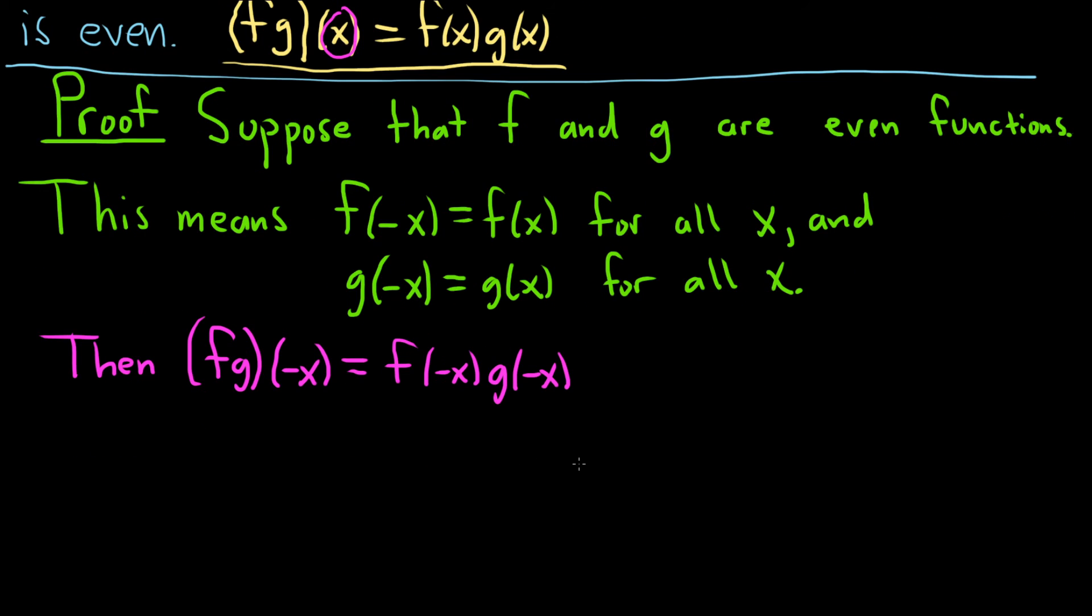But we know something about f of negative x. It's equal to f of x and that's because f is even. And this piece here, g, is equal to g of x, and that's because g is even. But just for extra clarity, I'll say this is because f and g are even.